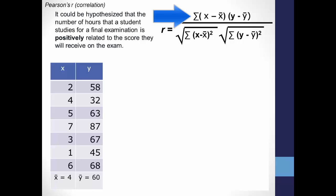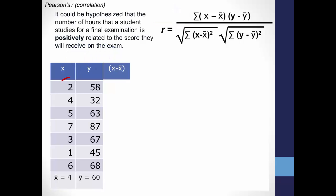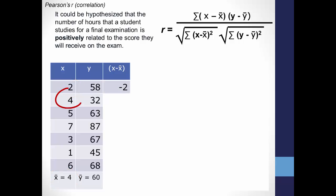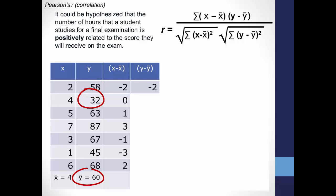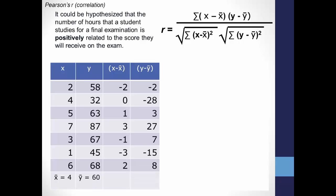Look at the numerator of the formula: the sum of each score in the group minus the group mean. You do this for the scores on the x variable (number of hours) and the y variable (score on the exam). Starting with x: 2 minus the mean of x (4) equals negative 2; then 4 minus the mean of x equals 0. Continue doing this for all scores in the x group, then do the same for y: 58 minus the mean of y (60) equals negative 2; then 32 minus 60 equals negative 28, and so on.